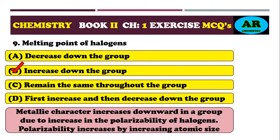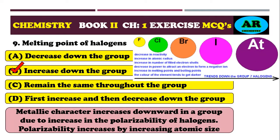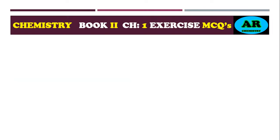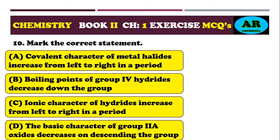For halogens, atomic size increases down the group, which increases polarizability. Due to this increased polarizability, the melting point of halogens increases down the group. Therefore, the correct option is beta.